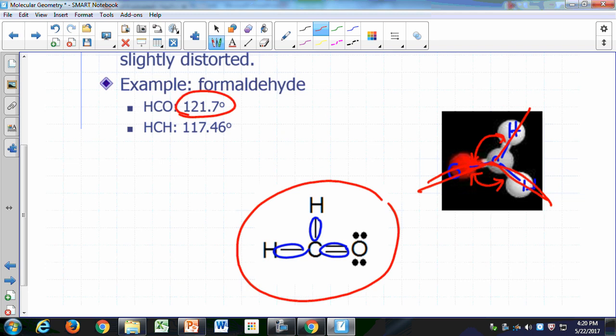Is, you'll notice, it's 121.7, it's slightly larger than 120. And that's because that double bond actually pushes those single bonds a little more strongly than the single bonds would push each other away. And you have the HCH angle here is going to be slightly less than 120. It turns out to be 117.46 degrees.